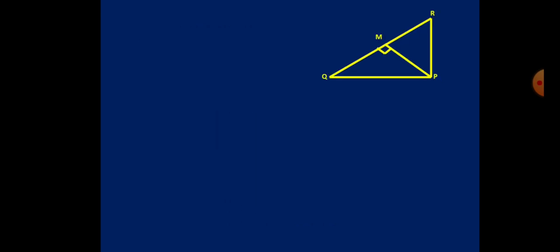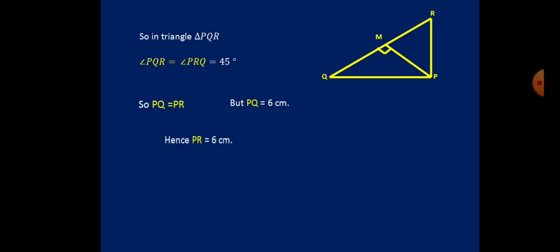For the last part: PQ equals 6 cm is given. Since angles PQR and PRQ are both 45 degrees, the opposite sides PQ and PR must be equal. Therefore PR equals PQ, which is 6 centimeters.